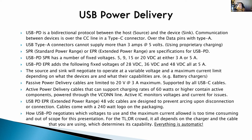There's USB PD SPR — Standard Power Range — as opposed to EPR — Extended Power Range. In SPR, when they negotiate, they can go 5, 9, 15, or 20 volts at either 3 or 5 amps. In EPR they bump the voltage up further to 28, 36, or 48 volts DC at 5 amps. The 48V at 5 amps is still relatively new. Special cables rated for this are required because when a cable is rated for that voltage and you pull the connector out, you can get arcing.